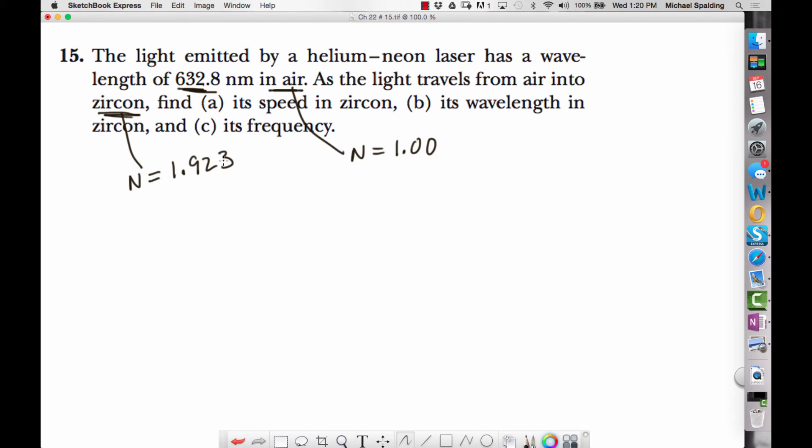I'm not going to have you looking up stuff on a quiz. So as the light travels from air into zircon, find its speed in zircon. So to do part A, we're simply asked to find the speed of light in zircon. The equation that applies here is the definition for index of refraction, which is N equals C over V.